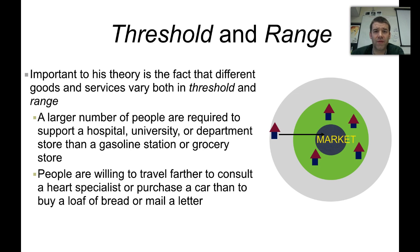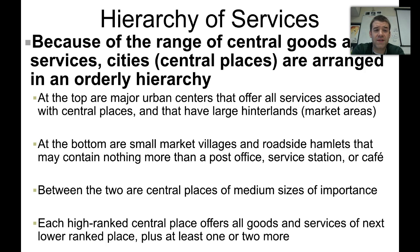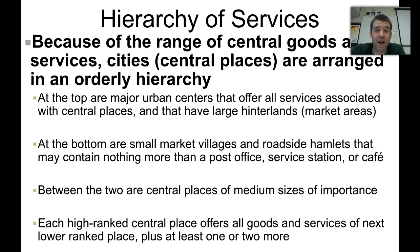Threshold and range are a very important part of Christaller's theory. Because of these factors, the kinds of services found in any particular settlement are based on a hierarchy. In larger urban areas and market areas, we see a greater variety of services. In smaller places, there's a more scarce offering — instead of specialized stores and large public institutions, you're likely to see a roadside café and maybe a gas station, with everything in between.